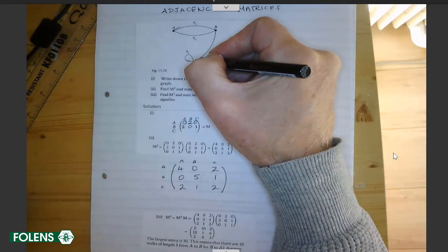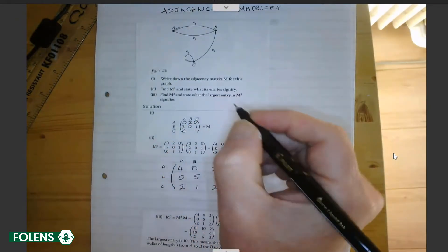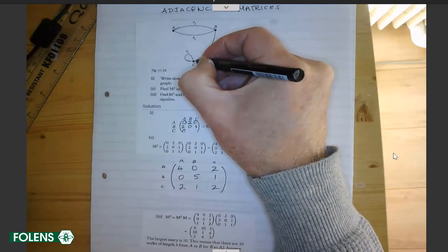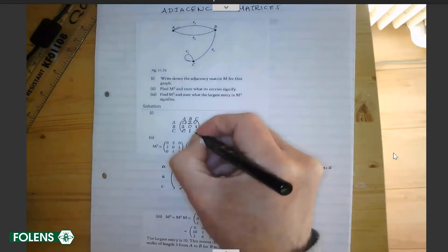And now what about C? C goes to A? No, it doesn't. There are no routes there, so that's a zero. From C to B, there's one road. And from C to C, there's a single loop, one.